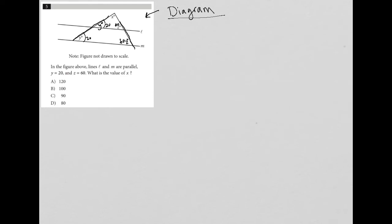If this here is 20 and this is 60, that means that X has to be 100 because the three angles of a triangle must add up to 180.